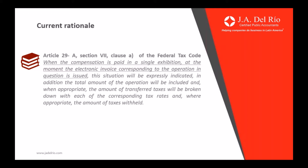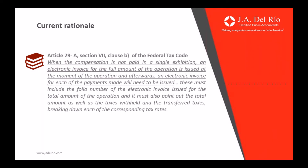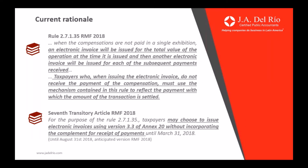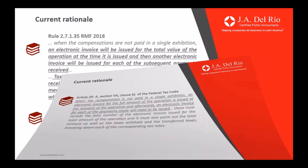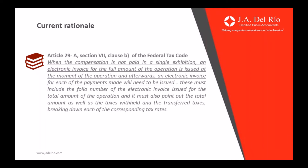However, the same article in Clause B specifically mentions that when you carry out a transaction that is not paid in a single exhibition, or it's paid afterwards after you bill your client, then you will be obligated to bill your client subsequent invoices related to the payment. The same disposition mentions that in that electronic invoice, you need to include the folio number of the electronic invoice issued for the total of the operation, as well as the total amount of taxes broken out by tax rate. Those are the three main requirements that your electronic invoices must include whenever you receive a collection.